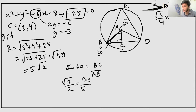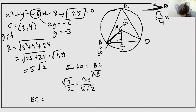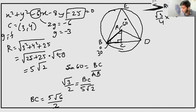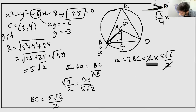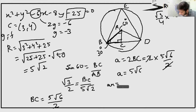We solve for BC: BC equals root 3 by 2 times the radius. Then the full side of the equilateral triangle is 2 times BC. So our side A equals 2 times 5 root 2 times root 3 by 2, which simplifies. Calculating: A equals 5 root 6.